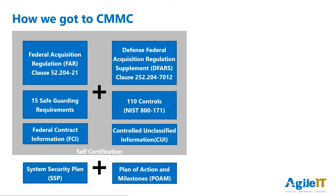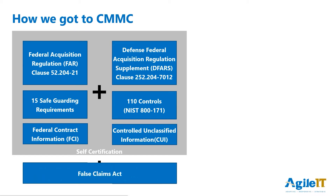The SSP says what is working and what is in place, and the POAM is an outline of how the organization plans to reach full compliance. The problem is that many contractors don't even have those. And of those that do, many wrote them in response to DFARS-7012 a couple of years ago when that went into effect, and they haven't touched them since. This opens them up to lawsuits under the False Claims Act.